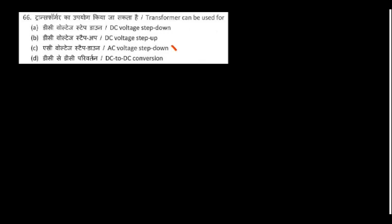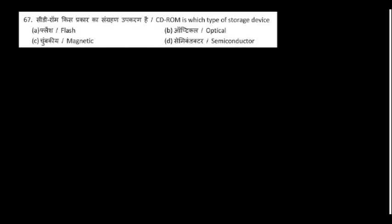A transformer can be used for AC voltage step-up or step-down only — not DC. CD-ROM is which type of storage device? It is not flash, not magnetic — it is an optical storage device, because laser light is used to write into a CD-ROM.